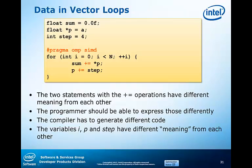You may not realize that under the covers, these two plus-equal operations mean very different things. Sum plus-equal star p means that we are doing a reduction of all the array elements in array p and summing them into a variable called sum. P plus-equal step is incrementing the address of the pointer to access the next element. Very similar-looking statements with very different meanings. This is why the SIMD directive has been given such a variety of clauses to help tell the compiler what we actually mean by these statements.